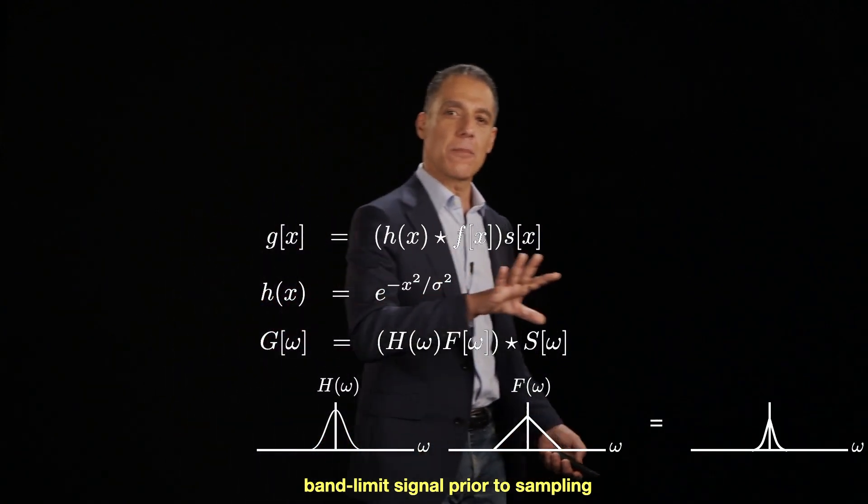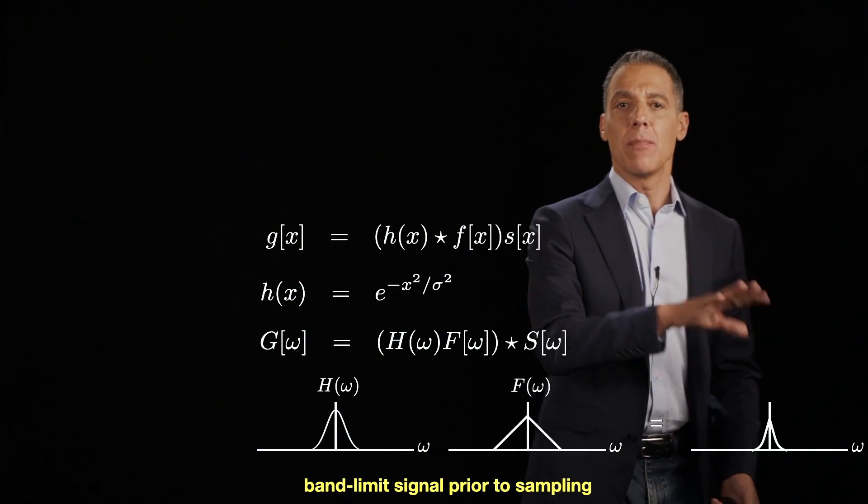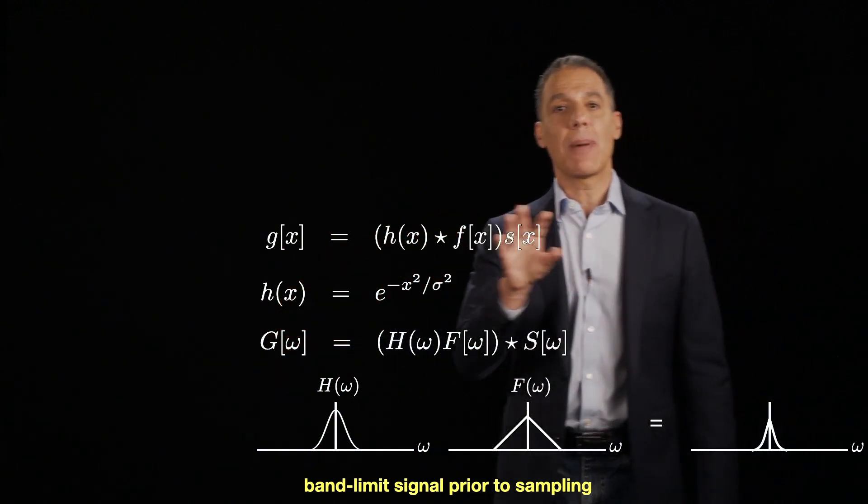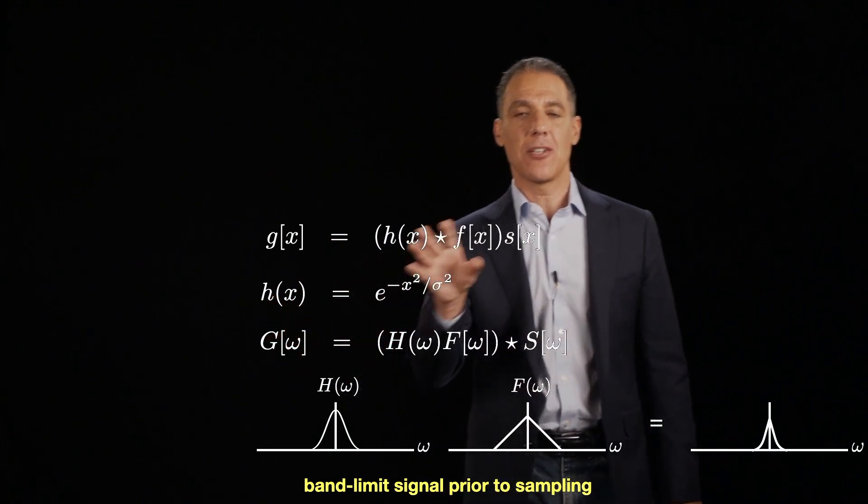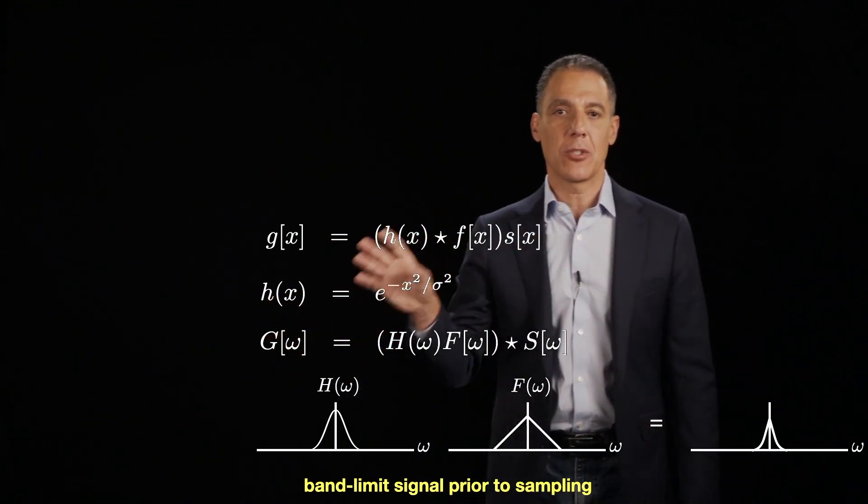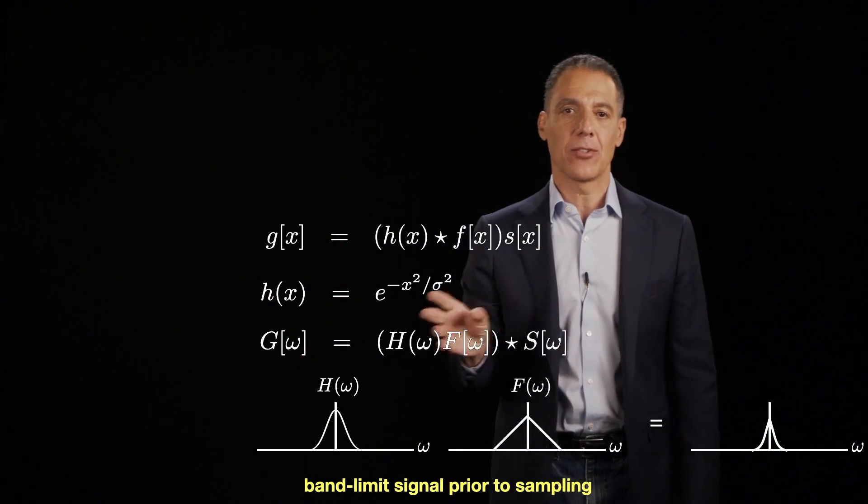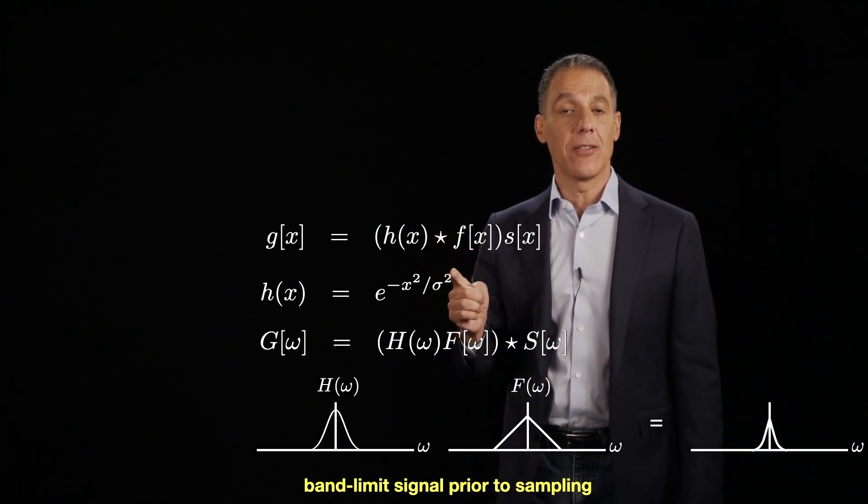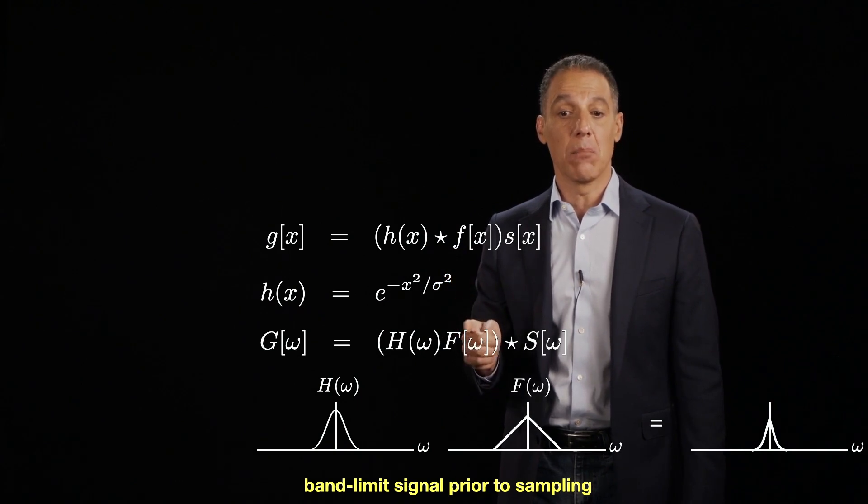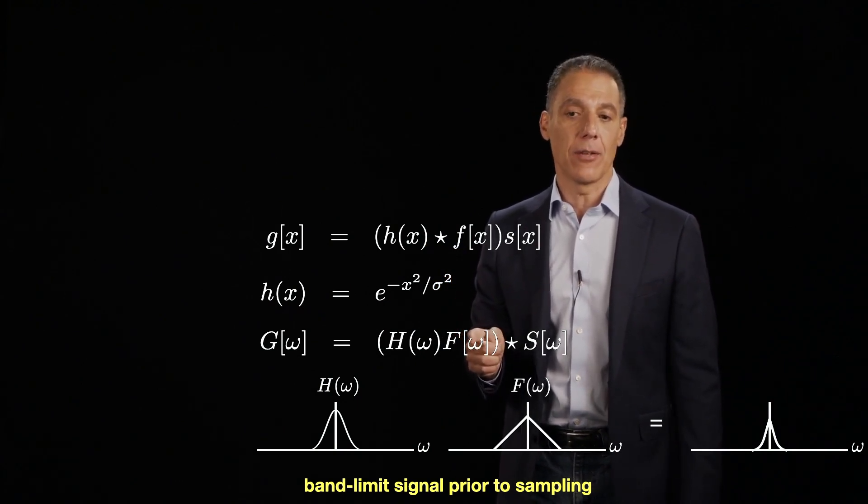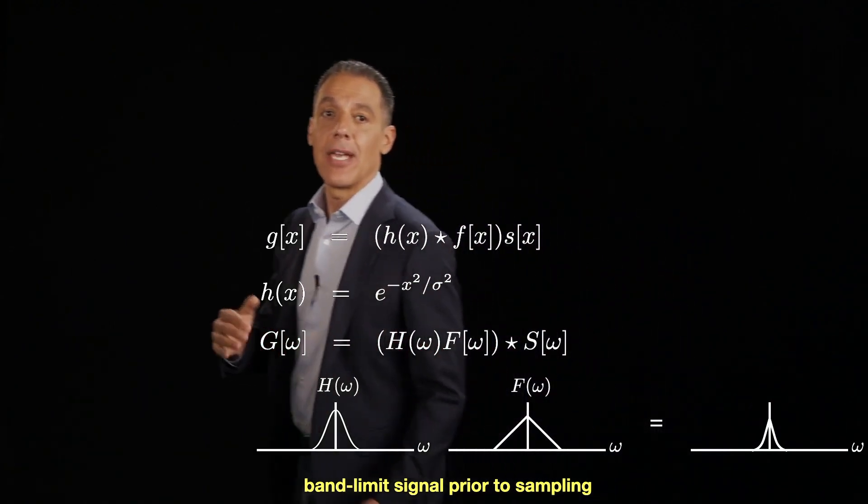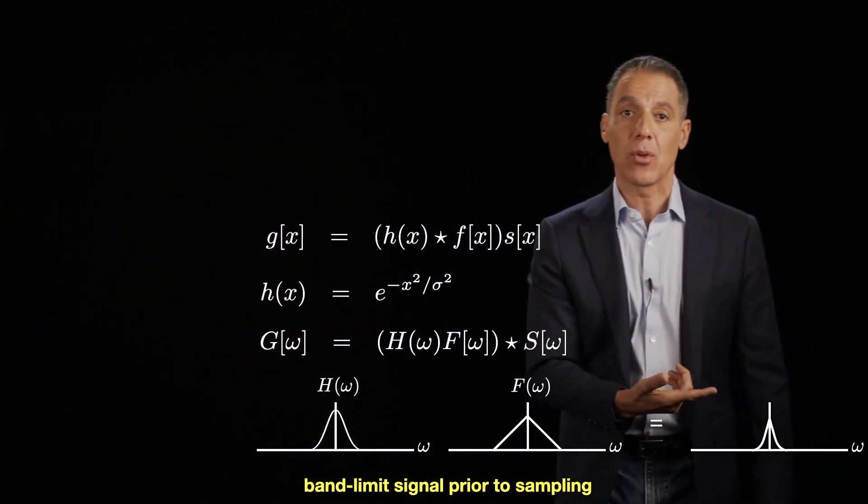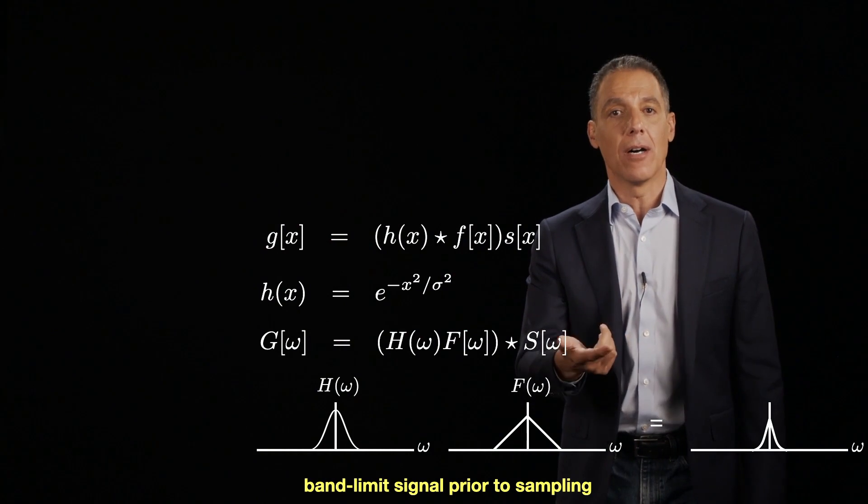Okay. So here again, you can see this power of moving between the space domain and the Fourier domain. You can see the power of this relationship of multiplication and convolution between space and Fourier because we can reason about the signals in different domains. And so by simply convolving in the space domain by Gaussian, multiplying in the Fourier domain, I will have a band limited signal, which I now can subsample without fear of aliasing.